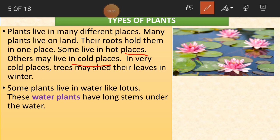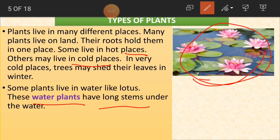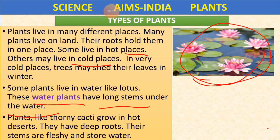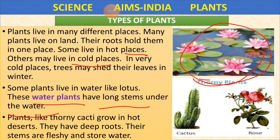Some plants live in water — these are called water plants. An example is the lotus. In the diagram we can see beautiful pink lotus flowers growing in water. Water plants have long stems that are under the water. We can only see the leaf and flower above the water surface. The roots and stems are hidden below. Such plants are called water plants.